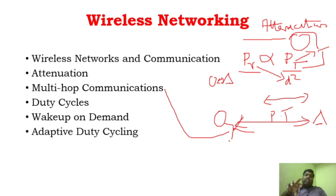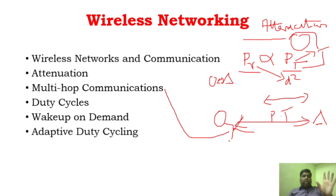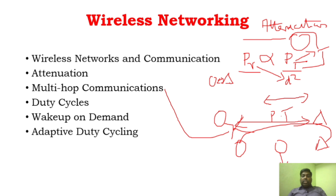If you don't understand what multi-hop communication is, there is another video posted — just go and watch that. In sensor networks, there will be both single-hop communication and multi-hop communication. We need multi-hop communication because we can have more sensors between base station and the sensors. This sensor will act as a relay — instead of directly transmitting to the base station, we transfer data to an intermediate node, and the transmission power required will be very less.